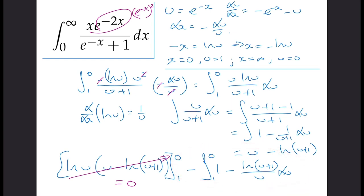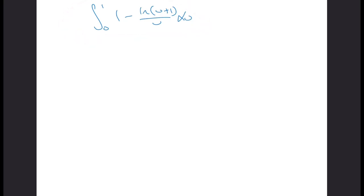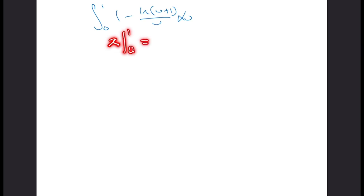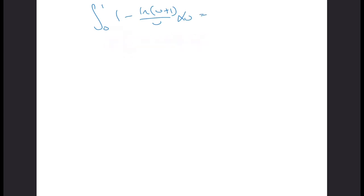So now all we need to consider is the remaining integral. We flip the limits using the negative sign, rewriting from zero to one. The simple term integrates to give x evaluated at one and zero, which is one minus zero, i.e. just one. So we now have one minus the integral from zero to one of the natural log of (u plus one) over u, with respect to u.